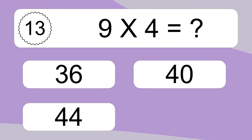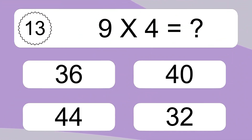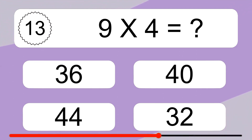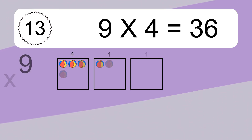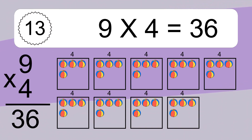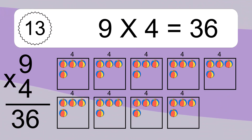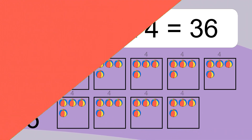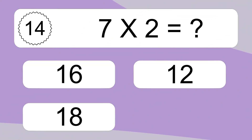9 times 4 equals what? 9 times 4 equals 36. We have 9 boxes, and each box has 4 colorful balls inside. If you count all the balls in all the boxes together, you will have 9 times 4 balls. This equals 36 balls.